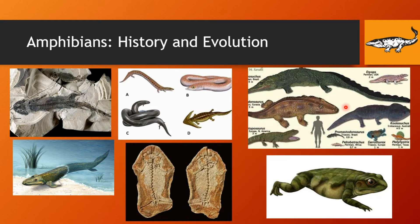Later down the line in the Permian period, much like reptiles, the amphibians also split into two groups. Group 1 were the lepospondyls, which were smaller with more slimy skin, and some examples can be seen here. The second group were called temnospondyls, which were larger, slightly more reptilian-looking but still amphibians, and were semi-aquatic with less slimy skin.